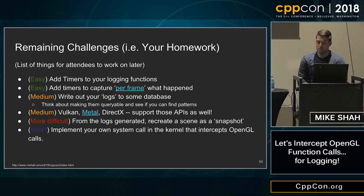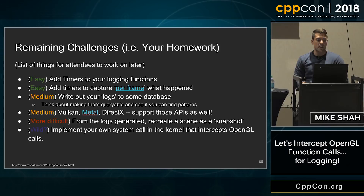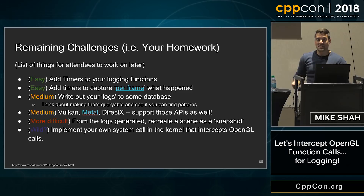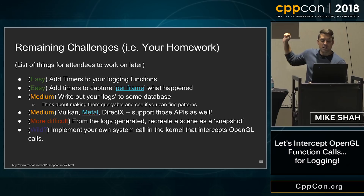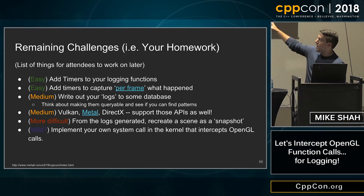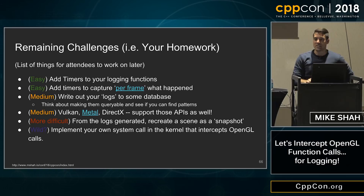I said I was a teacher at the start, so you have some homework — some feasible next steps. The code for what I presented will be online. Things you should add: timers to your logging functions to get some information, maybe timers to capture per-frame data, writing your logs out to a database so you can investigate. We're talking about graphics but I've skipped Vulkan, Metal, and DirectX — those might be interesting to look at. And in the more difficult areas, if I have all this information, can I recreate a snapshot of the scene? That's what NVIDIA's pixel history tools are really good at. And something wild: implement your own system call that looks for OpenGL things — it might be more performant.